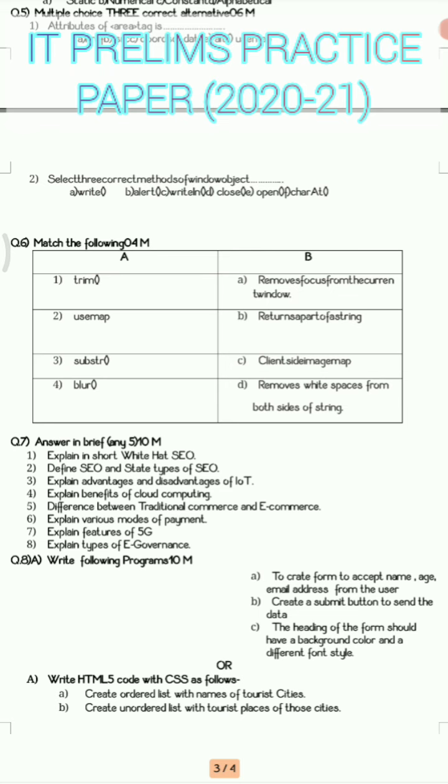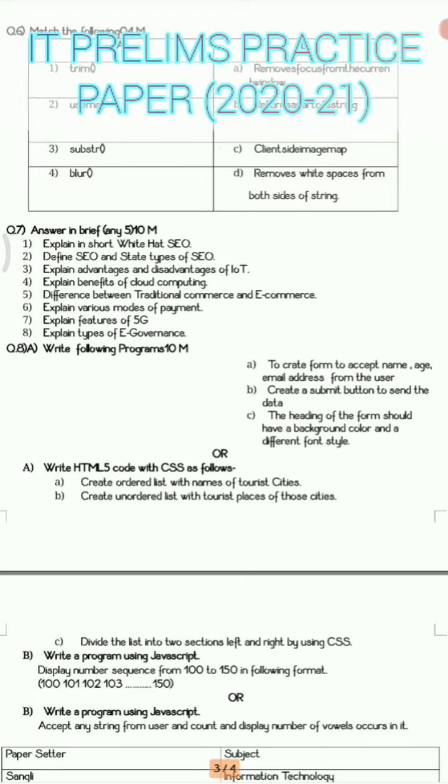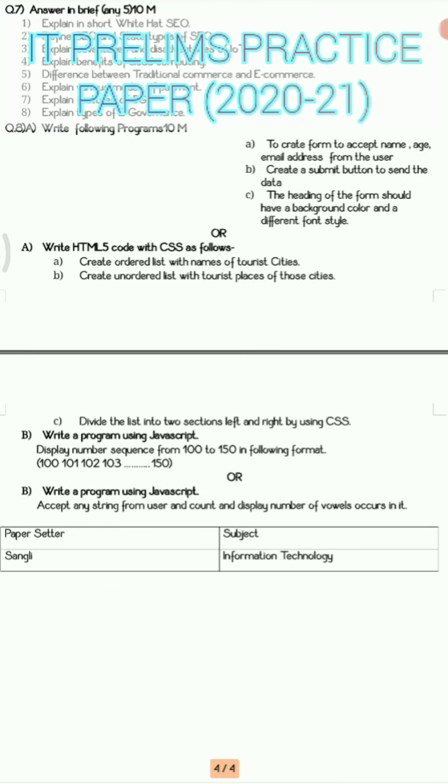Then we have question number seven, answer in brief. In this you have total eight questions given to you, out of eight questions you will be doing any five questions. The total weightage for this question number seven is ten marks and you have to solve five questions, means one question carries two marks each.